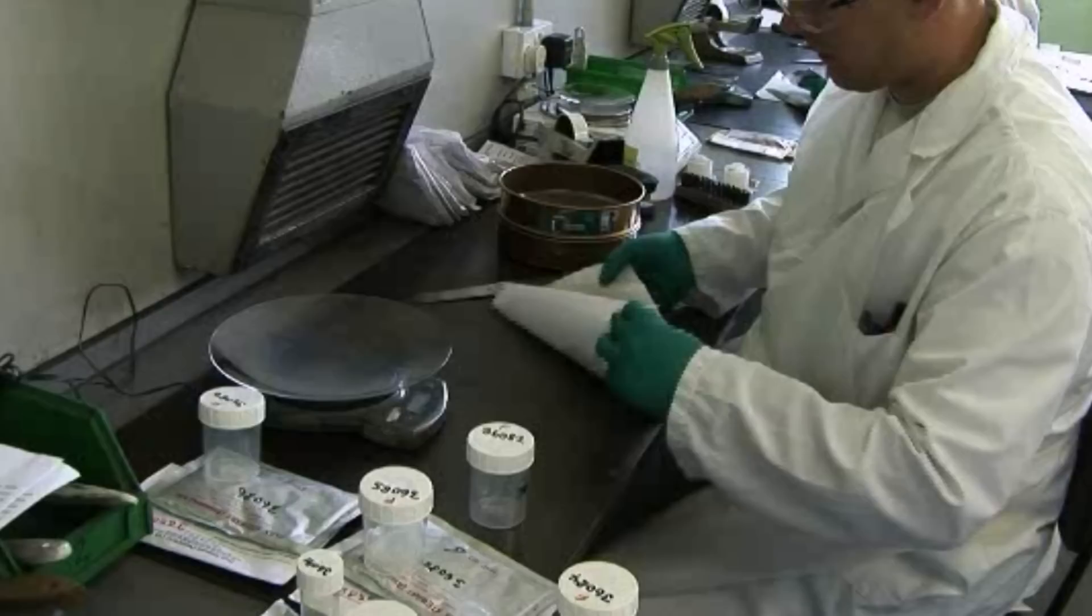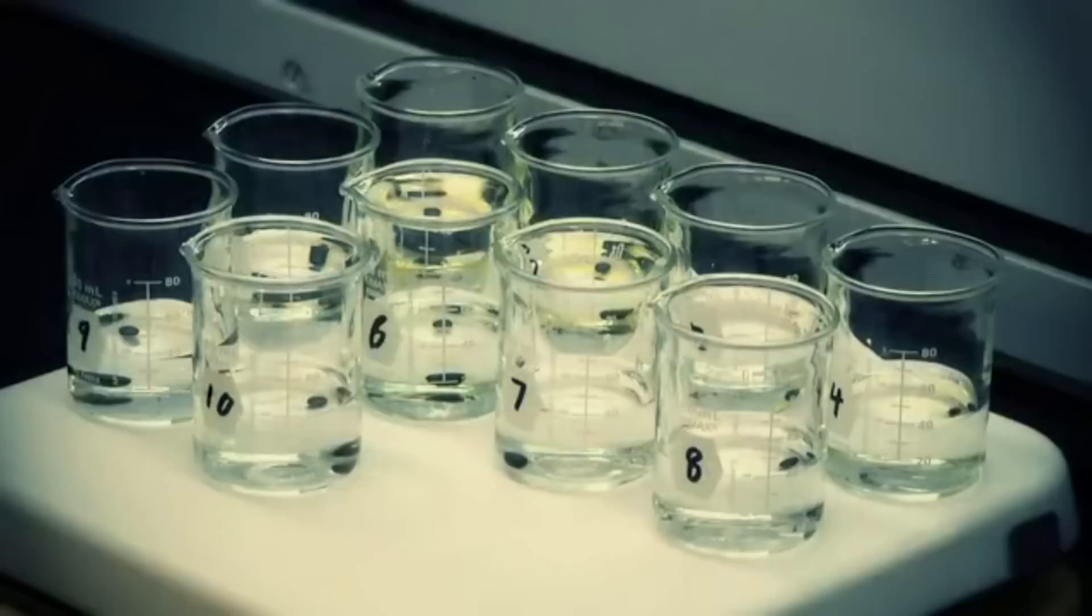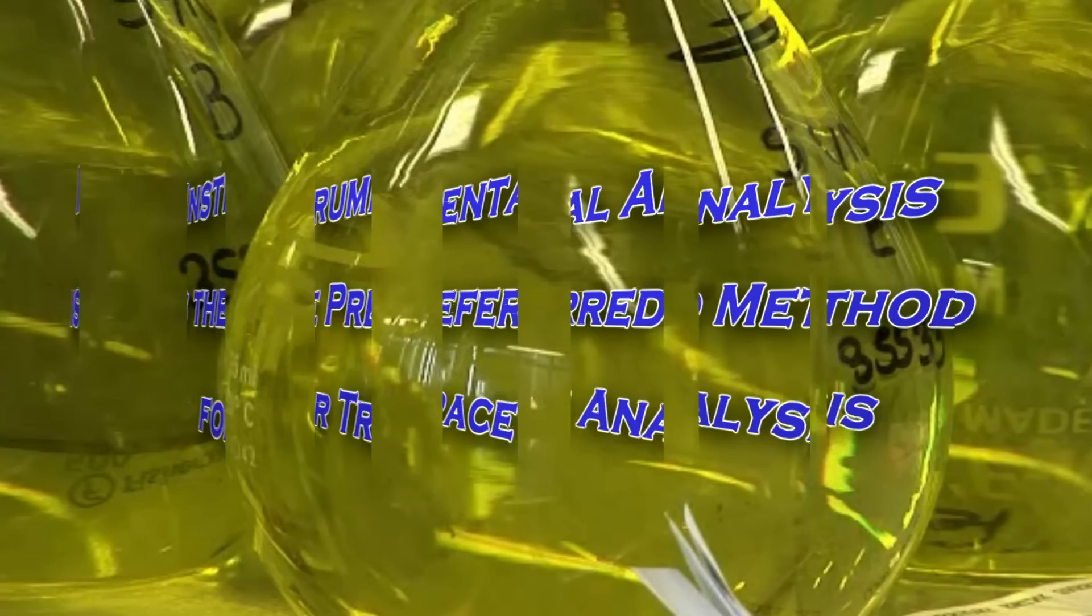For example, metal alloys must first be dissolved into solutions for wet chemistry and many instrumental analysis techniques. Precious metal concentrations of .01% or lower are categorized as trace or low range. Instrumental analysis is the preferred method in this range.